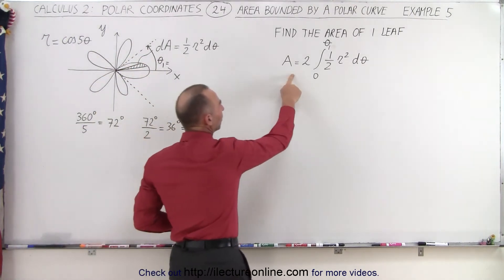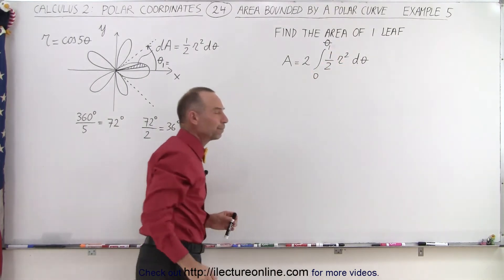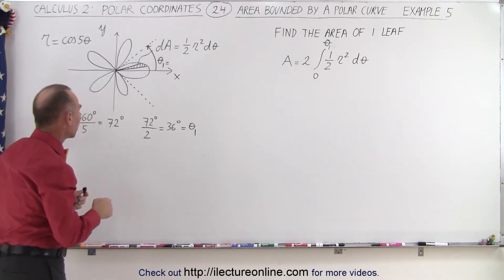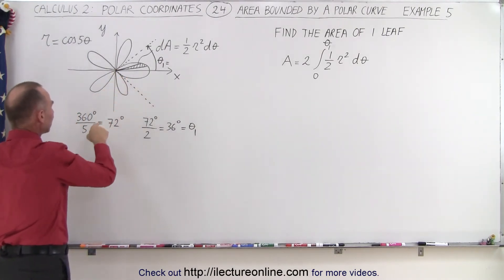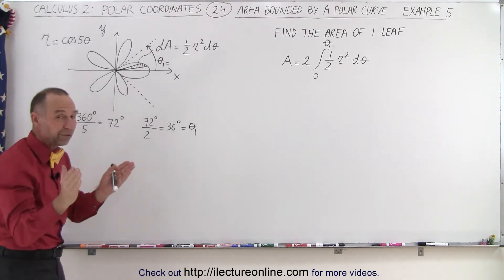So the idea is to take it twice, the integral from zero to theta one, one-half r squared d theta. Now, what is the angle theta one? Well, if there's five leaves, we can take 360 degrees divided by five, which gives us 72 degrees for each leaf.